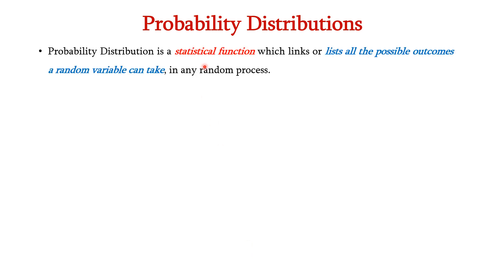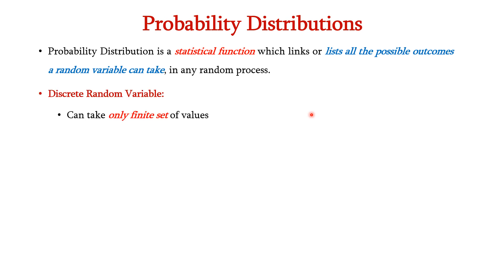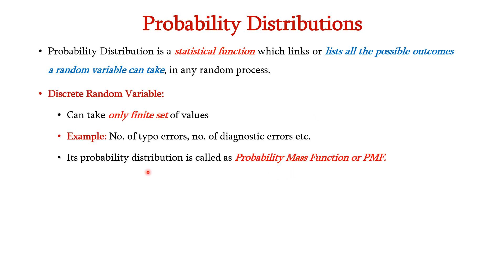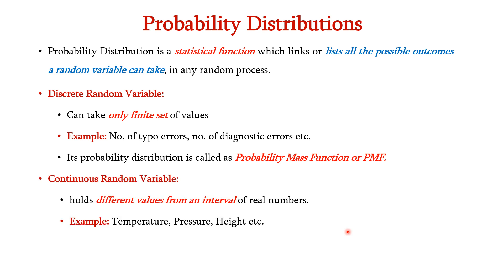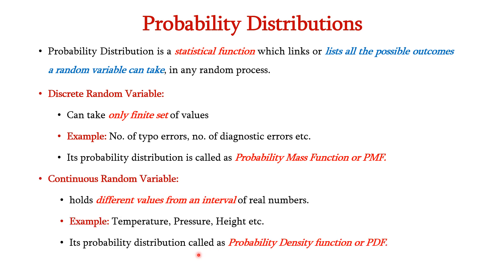Now let us see about probability distributions. A probability distribution is a statistical function which links or lists all the possible outcomes a random variable can take in any random process. If it is a discrete random variable, then the probability distribution is called the probability mass function or PMF. Some examples of discrete random variables are number of typo errors and number of diagnostic errors. For continuous random variables, the probability distribution is called the probability density function or PDF, and it holds different values from an interval of real numbers. Examples include temperature, pressure, and height.